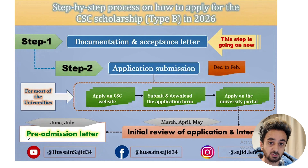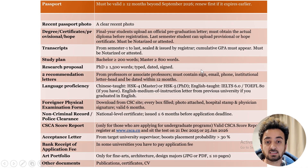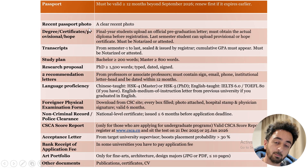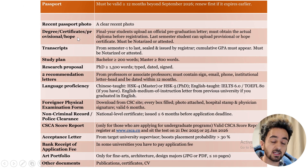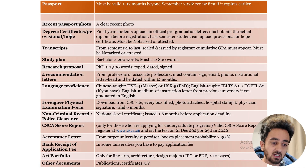The first document to apply on the CSC official portal is your passport. It must be valid for at least one year — if it expires in five or six months that will be a problem. Next is a recent, clear passport-size photo. Then your degree certificate or final certificate. If you're in your final year or semester, you can use a provisional certificate or hope certificate — that's acceptable for CSC scholarship.